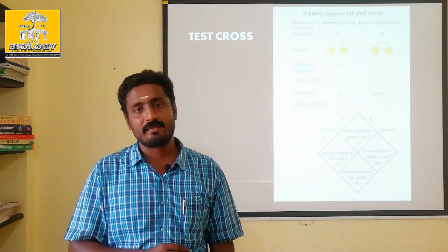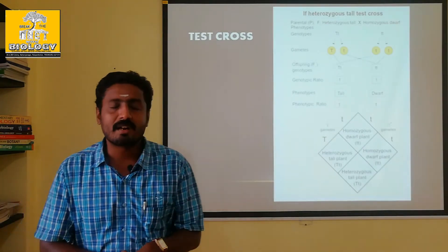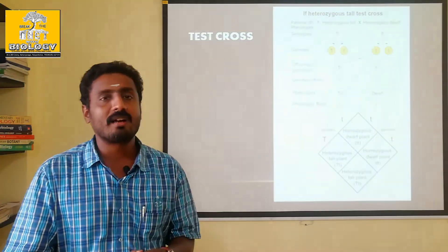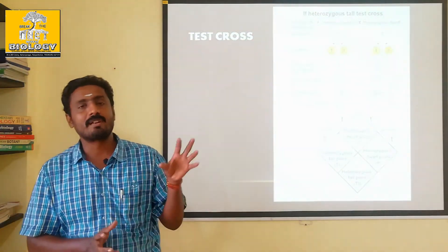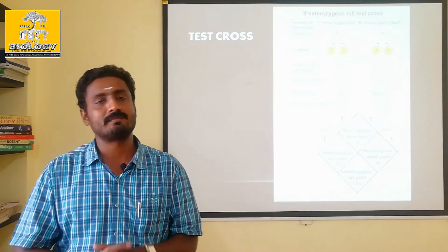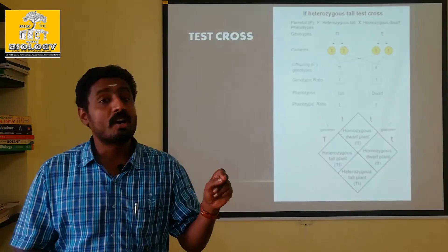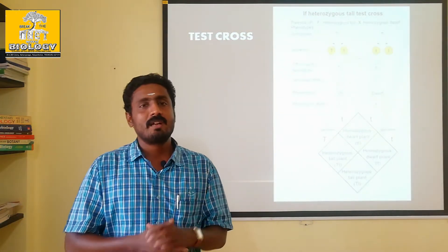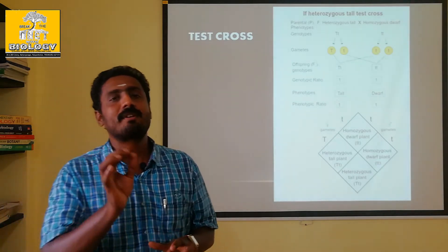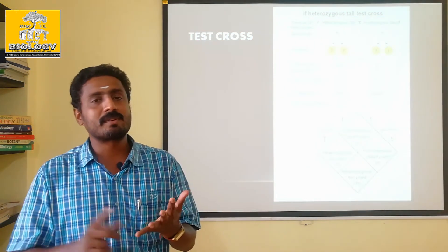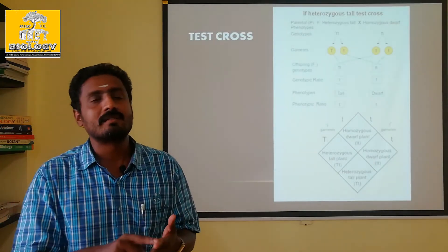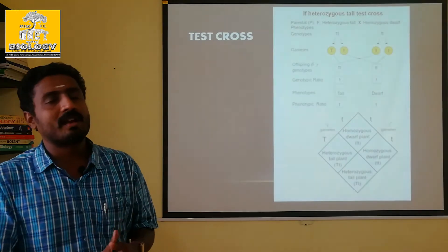That is small t, small t — homozygous recessive. If you have any plant in the same way, the homozygous recessive parent will be hybridized. The dominant character would be capital T. If you have a tall character, that is capital T, small t — a heterozygous condition. You can write the gene: capital Y, small y, representing yellow color for seed traits.